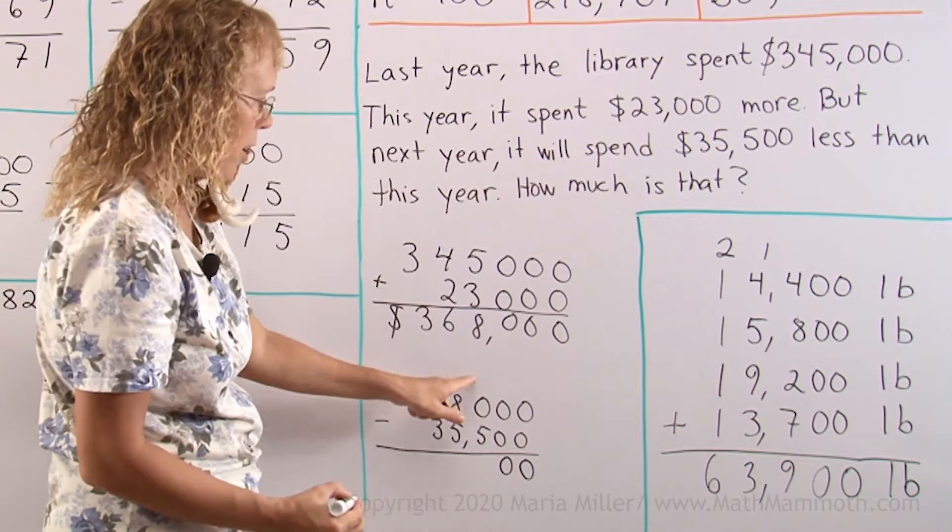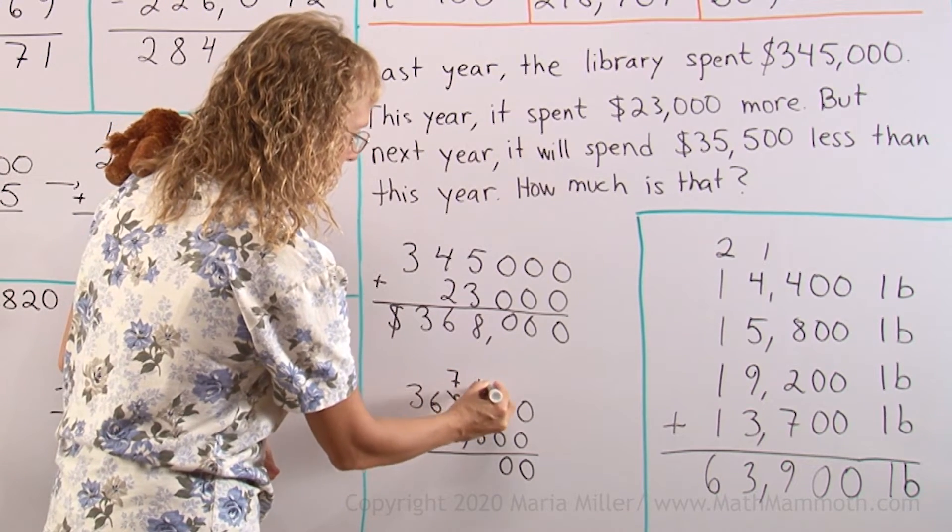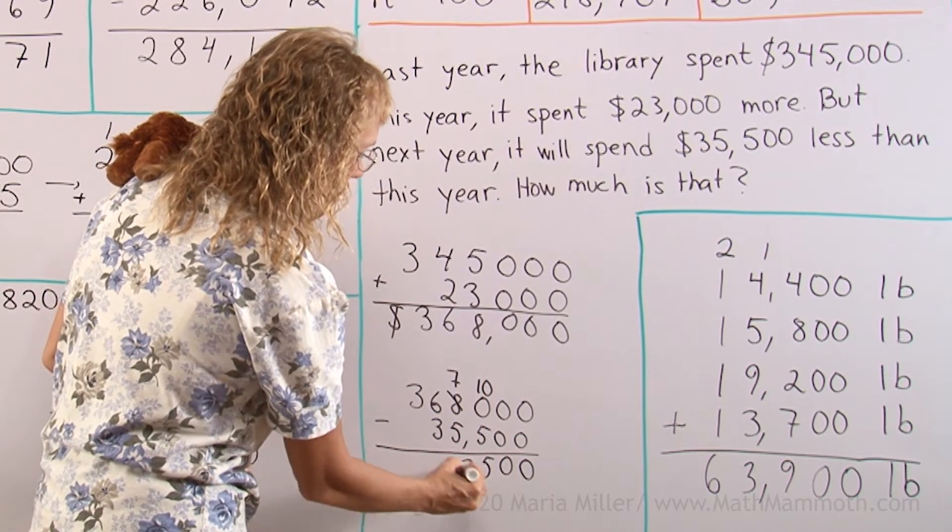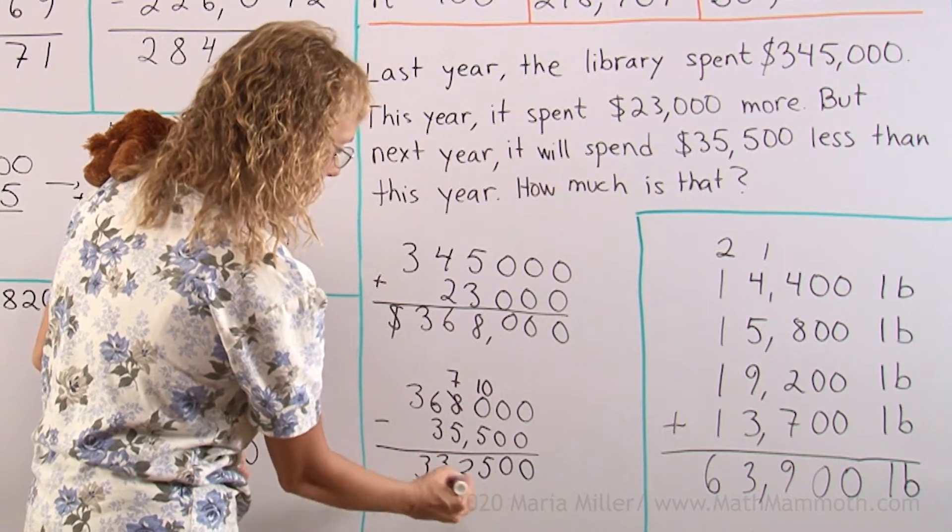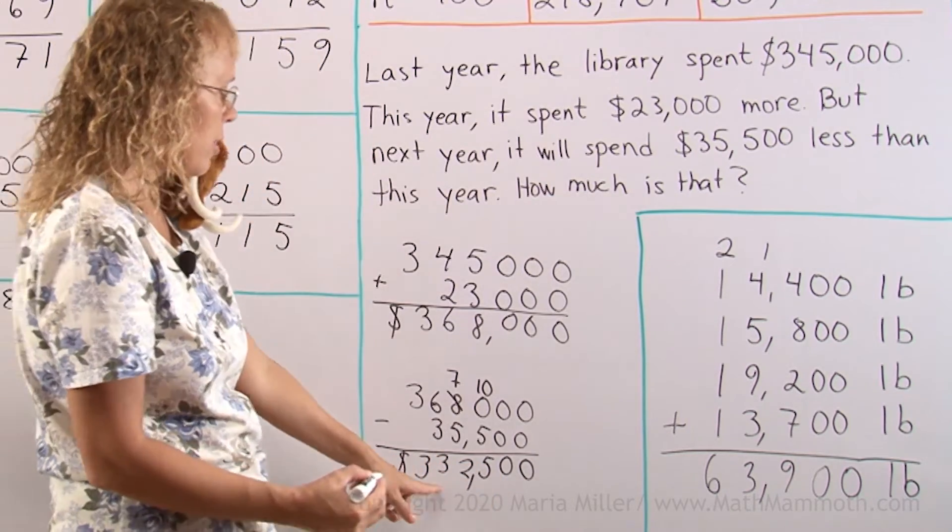Next year they are planning to spend this much less than this amount. $35,500 less than this amount. So now we will subtract. I could write a number right under it and subtract, but I don't have much space to write my borrowings and stuff. So I will write it again here. 368,000 minus 35,500. And here 0 minus 0, that's easy over here. Over here we need to then borrow or regroup. Leave 7 here and 10 here. 10 minus 5 is 5. 7 minus 5 is 2 is 3 and 3. Okay, so that is our final answer. $332,500.